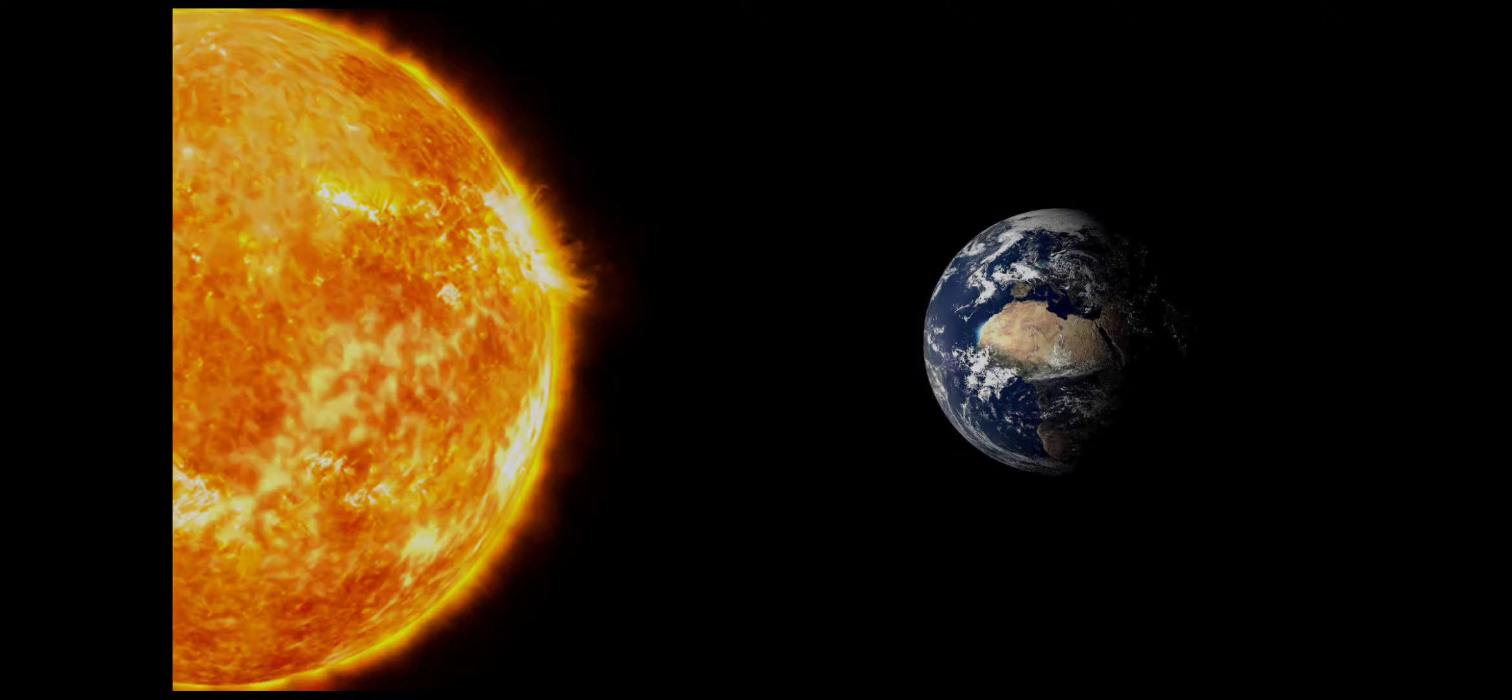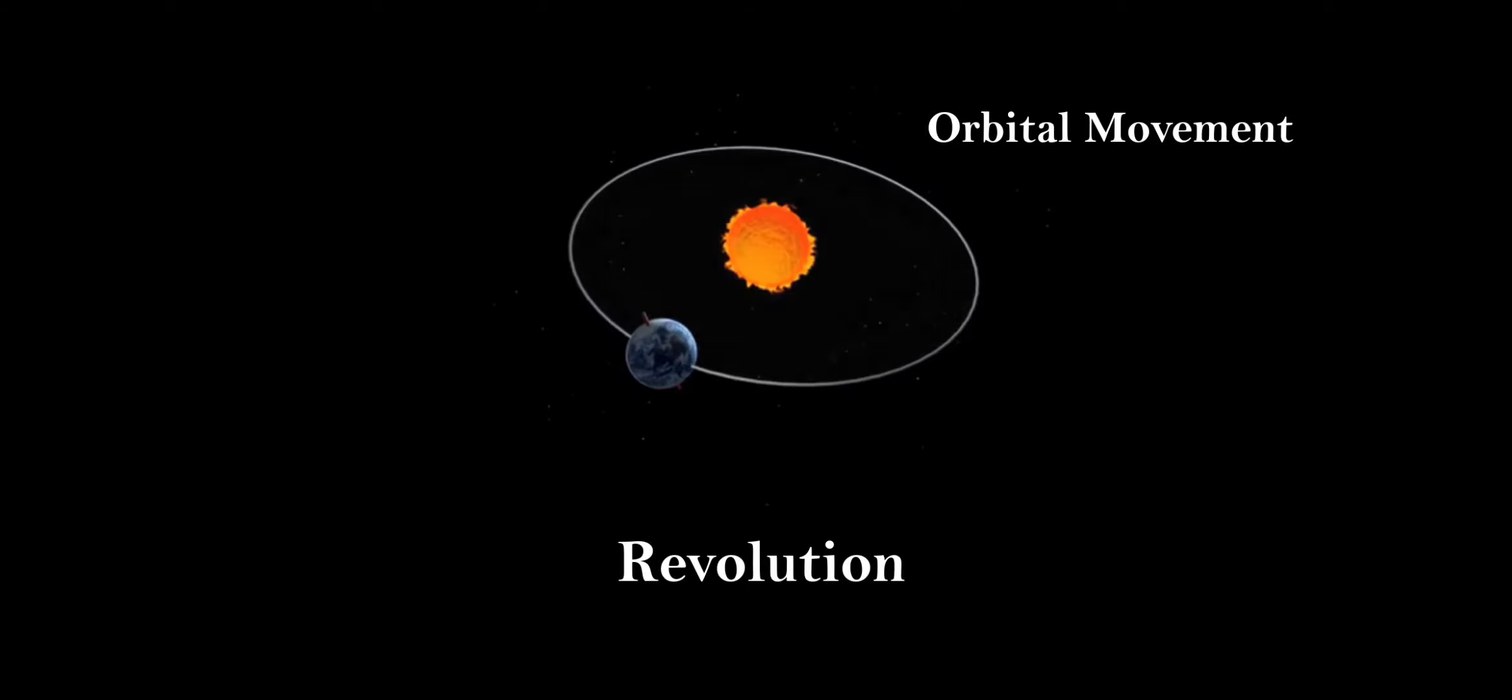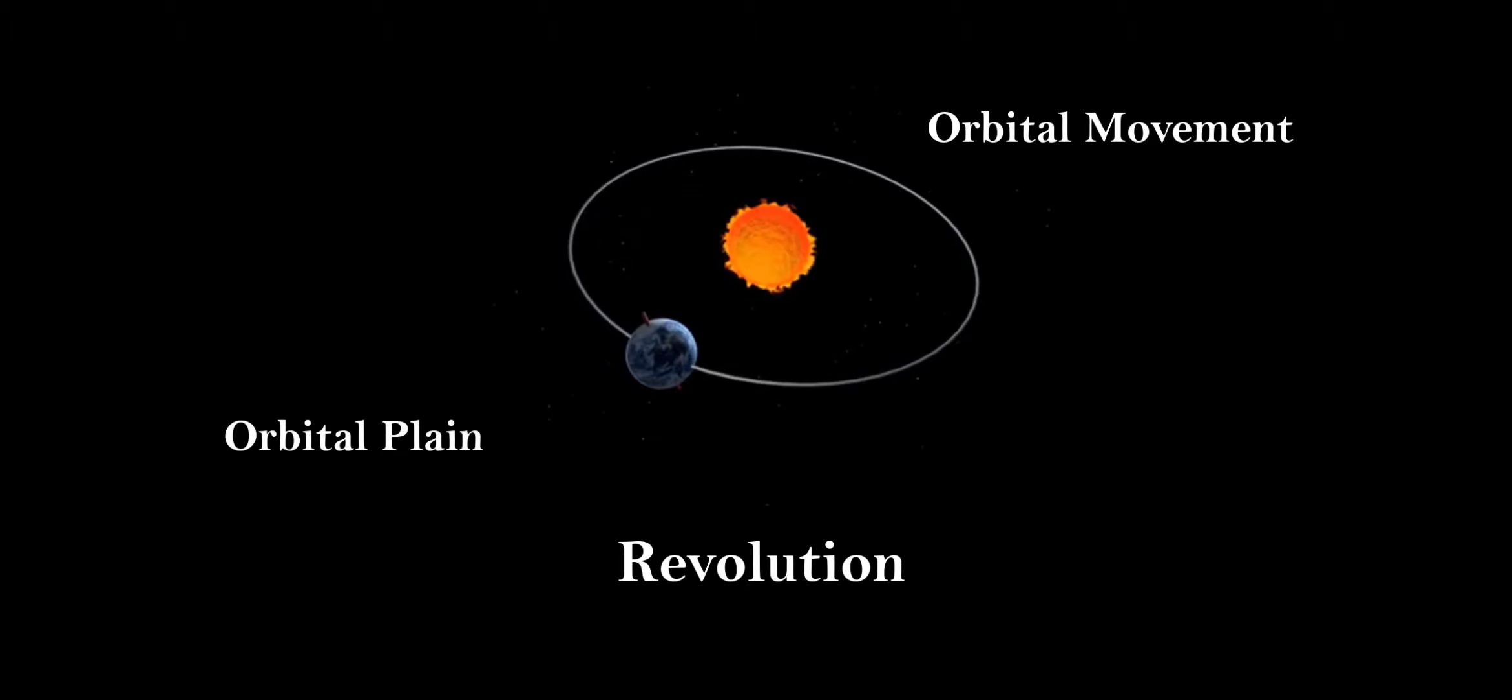Second motion is revolution. The second motion of the earth around the sun in its orbit is called revolution. It is the revolving movement of the earth around the sun in a fixed orbit. That's why it is also called orbital movement of the earth. The plane formed by the orbit is called orbital plane.